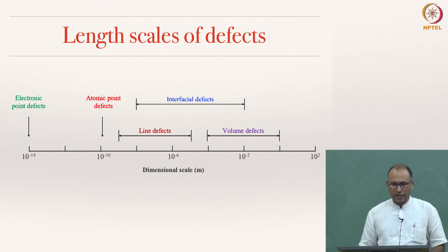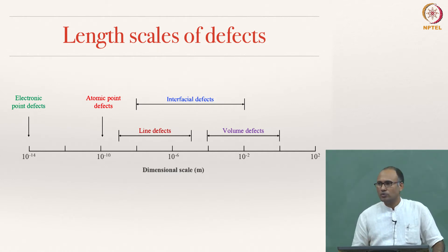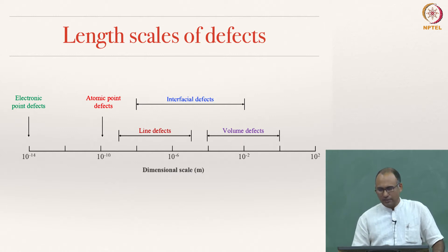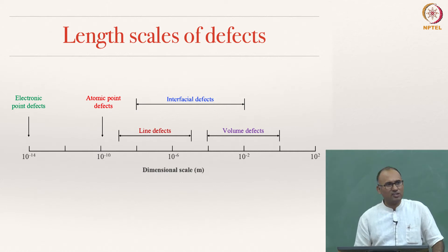When talking about atomic point defects, we work at the order of angstroms. Line defects are at the scale of tens of nanometers to microns — tens of micrometers. Interfacial defects have a higher length scale, from the micron scale to millimeters. Volume defects can usually be observed with the naked eye, whereas line defects and interfacial defects are usually not observable with the naked eye.